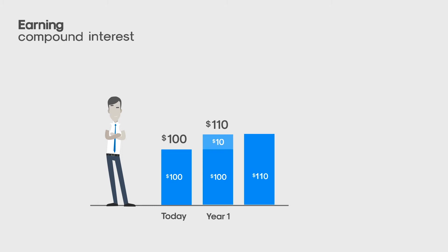Let's say that you put all of the $110 back into the bank, who promises to pay you another 10% after a year. This time, the bank will pay you 10% interest on your $110. So at the end of the second year, you will have your $110 plus an extra 10% in interest, which works out to be $11. So in total, you have $121. After just two years, you have earned $21 in interest, with $1 of interest paid on the interest you earned in year one. That is interest on interest.